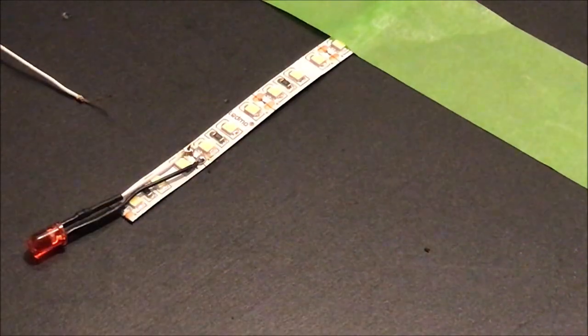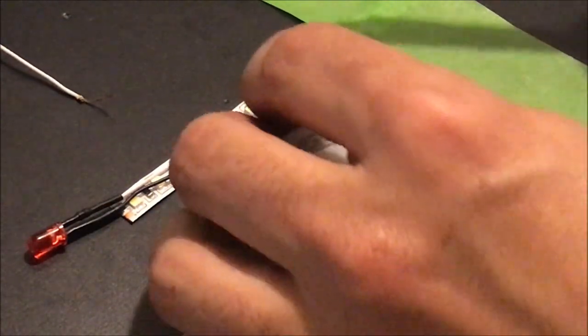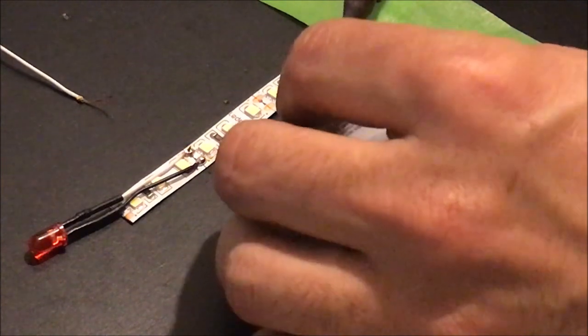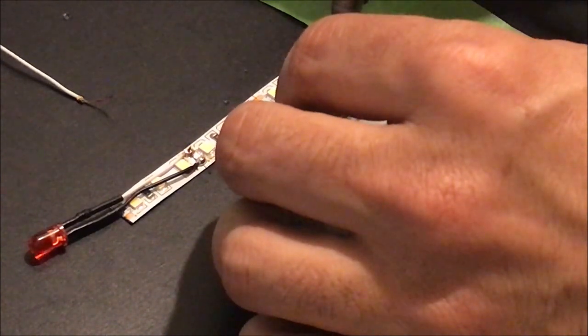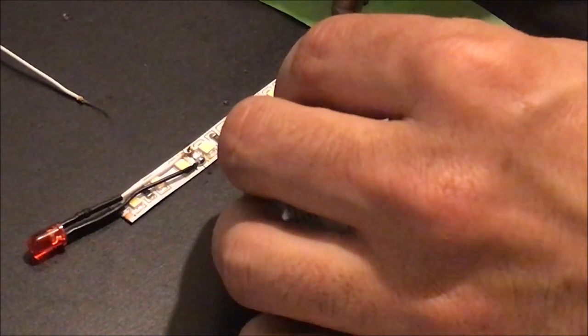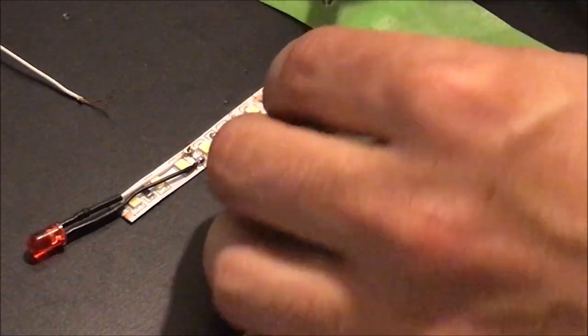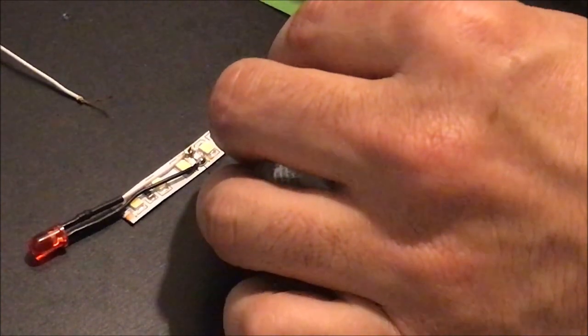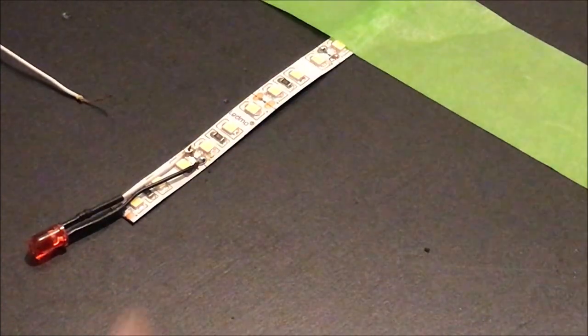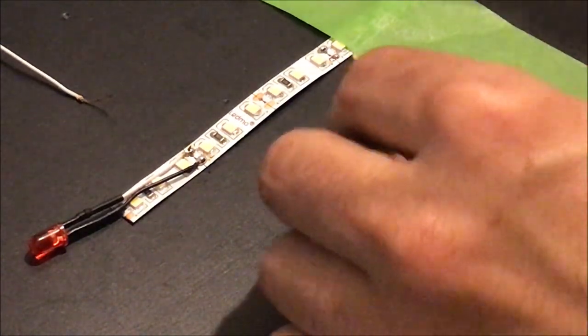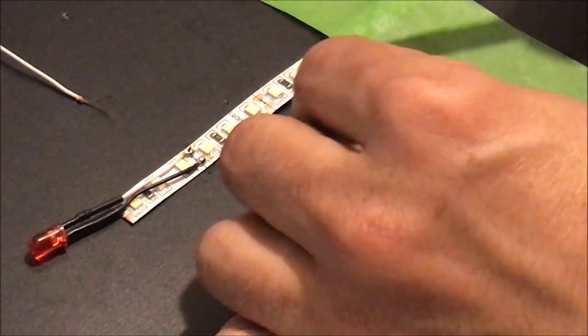After that, we're going to do exactly the same thing to add our power leads. They'll go down into the ship. Heat the connection, put just a little bit of solder on it, then you can take your tinned wire. These ones were already tinned.